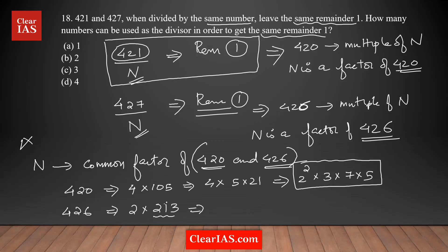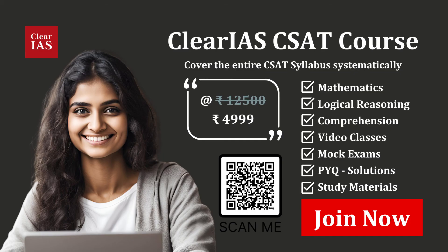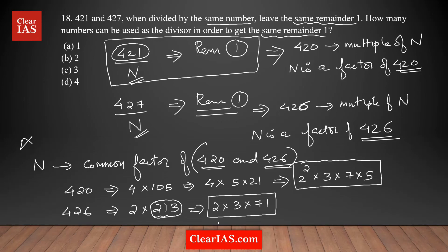213 is divisible by 3 because 2 plus 1 plus 3 is 6, a multiple of 3. So dividing by 3 gives 3 times 71, and 71 is a prime number, so we cannot proceed further. The prime factorized form of 426 is 2 × 3 × 71. Now listing the common factors: 2 is common, 3 is common, and 2 times 3 — which is 6 — is also common to both 420 and 426.